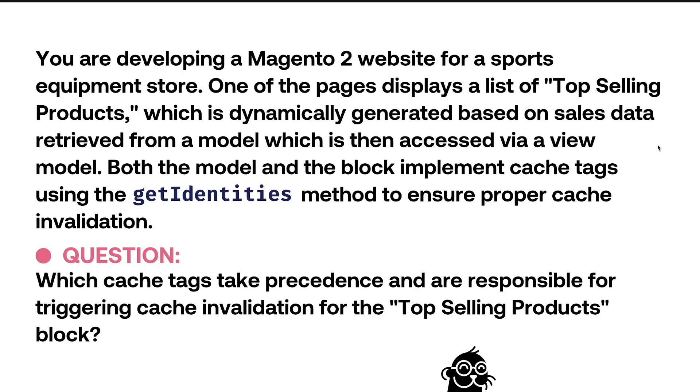Which cache tags take precedence and are responsible for triggering cache invalidation for the top-selling products block? Would this be a common scenario? No.